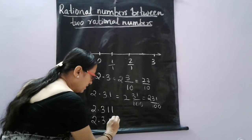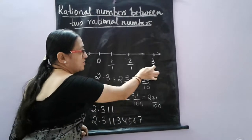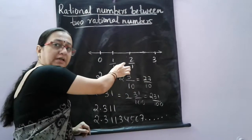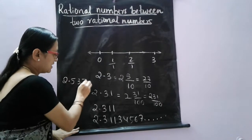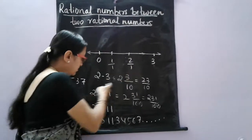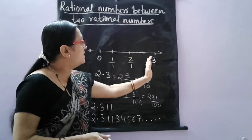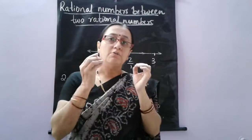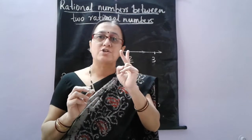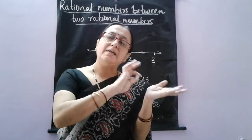If I say 2.3113456 7, this whole number is still lying between these two rational numbers. So I can go on adding digits. The number will be less than 3 but more than 2. If I say 2.537, again this number is greater than 2 but less than 3. So in this way we can go on finding rational numbers between any two rational numbers — countless, infinite rational numbers.